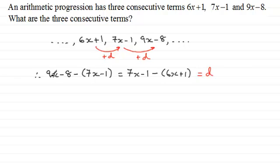So it's just a question of solving this equation here. So if I expand the brackets, we've just got 9x minus 8 on the first two terms, but here we've got minus 7x, and then we've got minus minus 1, so that's plus 1. And so that's why it's very important that you put this in brackets, because it's easy to trip up there. On this one, we've got 7x minus 1, and then we've got minus 1 times 6x plus 1, so that's going to give us minus 6x, and then minus 1.